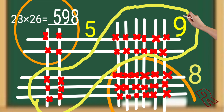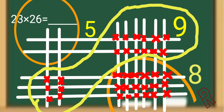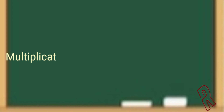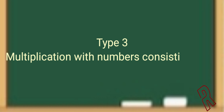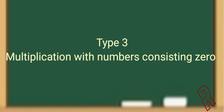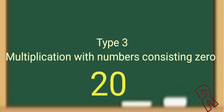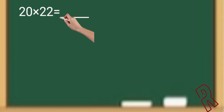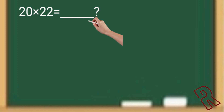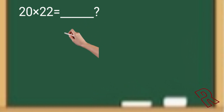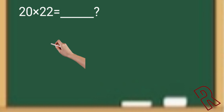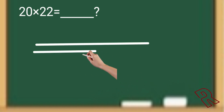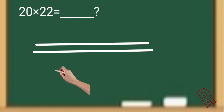So far we've seen single-digit multiplication, then simple two-digit multiplication, then two-digit numbers with carry. Next we'll see what to do when a digit is zero. If the number is 20 × 22, how do we draw lines for the zero in 20? For 20, draw two horizontal lines for the digit 2, leave a gap, and for the zero draw dotted lines or lines in a different color.